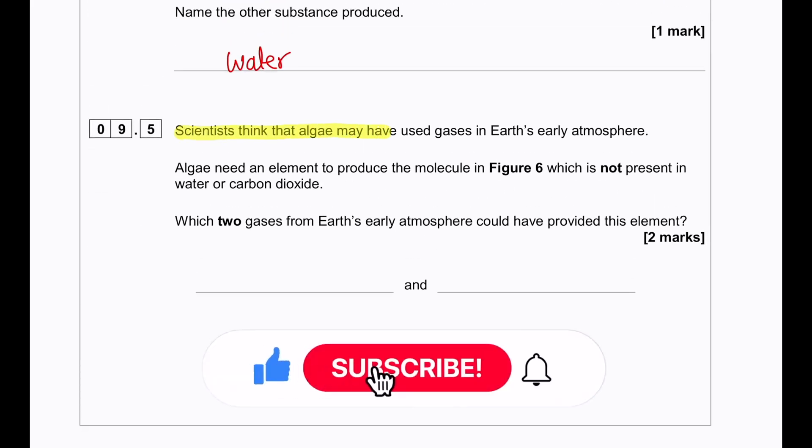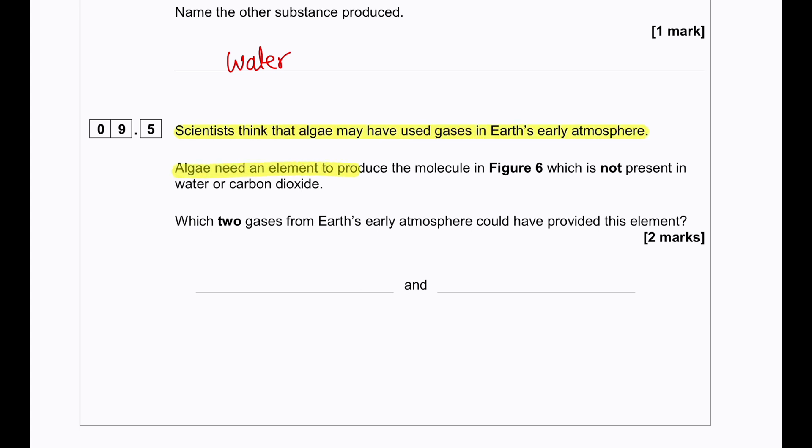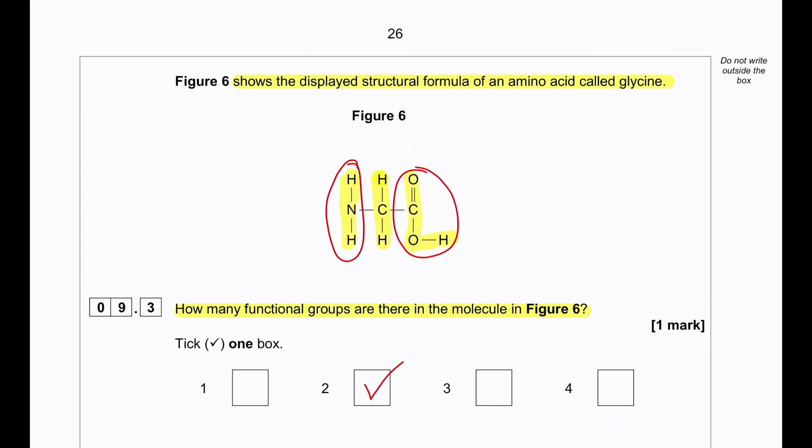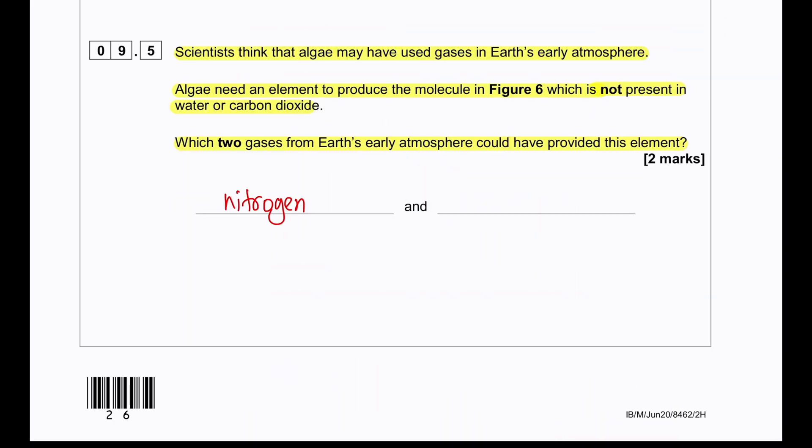Scientists think that algae may have used gases in Earth's early atmosphere. Algae need an element to produce the molecule in figure 6 which is not present in the water or carbon dioxide. Which two gases from Earth's early atmosphere could have provided this element? So in terms of figure 6, in figure 6 we can see that there is nitrogen. However, algae is unable to use nitrogen directly. So it must use it in the form of ammonia. Other accepted answers will be nitrogen monoxide, nitrogen dioxide or any other oxides of nitrogen.